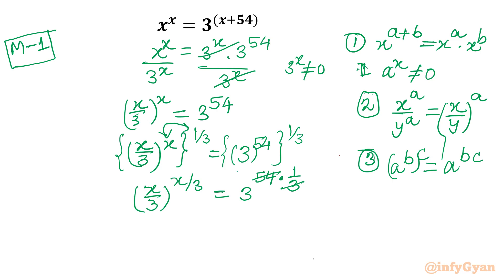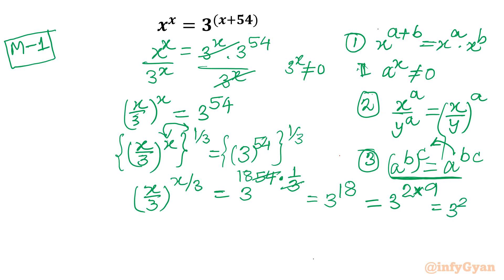Simplifying the right-hand side: 3^(54/3) = 3^18. Now I break 18 as 2 × 9, and using the exponent property from right to left, I can write 3^18 = (3^2)^9 = 9^9. So ultimately I have (x/3)^(x/3) = 9^9.